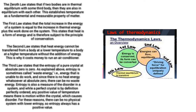The third law states that the entropy of a pure crystal at absolute zero is zero. Entropy is sometimes called waste energy, i.e., energy that is unable to do work, and since there is no heat energy whatsoever at absolute zero, there can be no waste energy. Entropy is also a measure of the disorder in a system, and while a perfect crystal is by definition perfectly ordered, any positive value of temperature means there is motion within the crystal, which causes disorder. For these reasons, there can be no physical system with lower entropy.